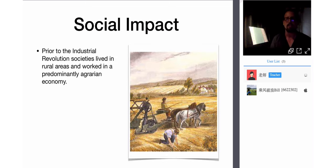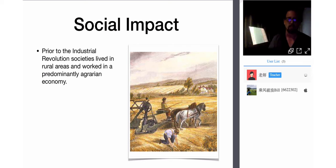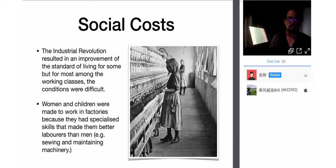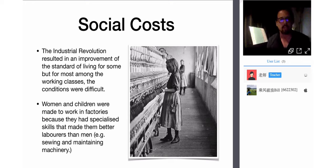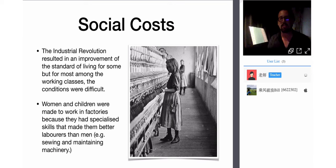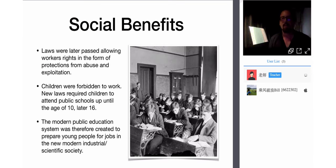People lived uninteresting lives, fairly poorly educated, in a kind of poverty for hundreds of years. The Industrial Revolution resulted in improvement of the standard of living for some — maybe the top 1%. But for most of the working classes, conditions were very difficult. Women and children were made to work in factories because they had specialized skills, such as sewing and maintaining machinery. Children were employed because they had small hands — this was a form of exploitation, basically a form of slavery.